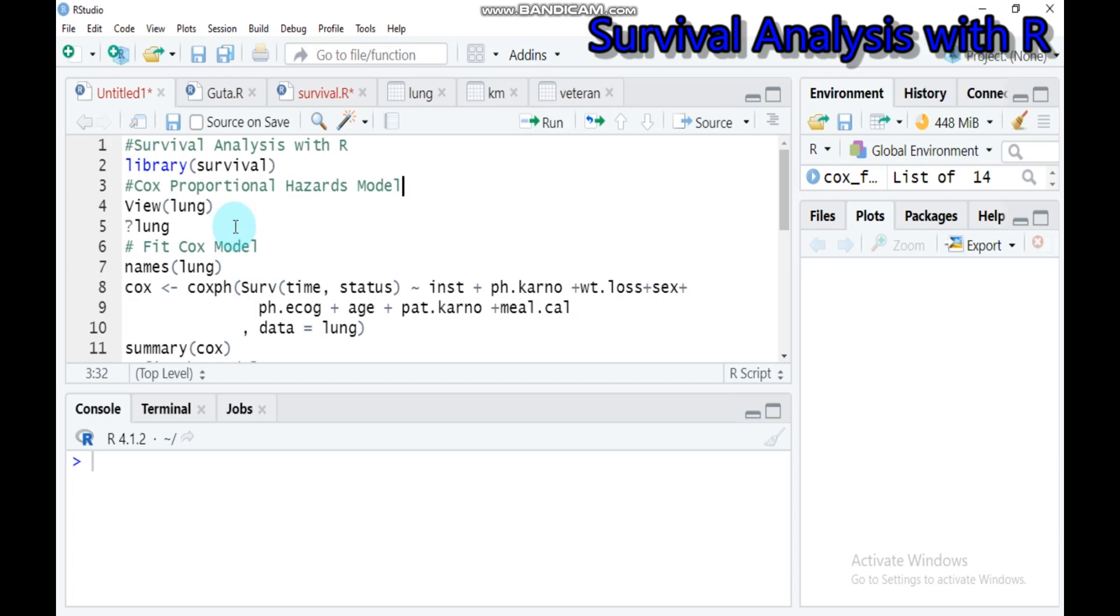This is an alternative method that works for both qualitative and quantitative predictor variables as well as categorical variables. The Cox regression model extends the survival analysis method to assess simultaneously the effect of several risk factors on survival time.